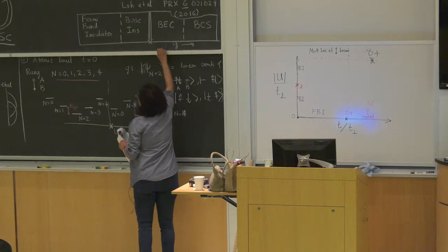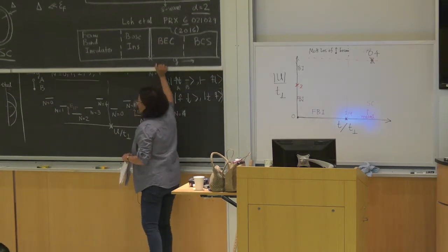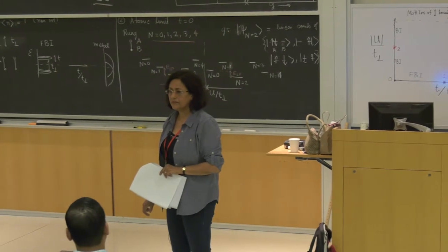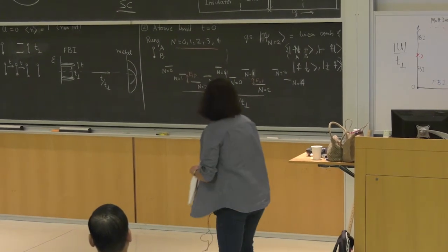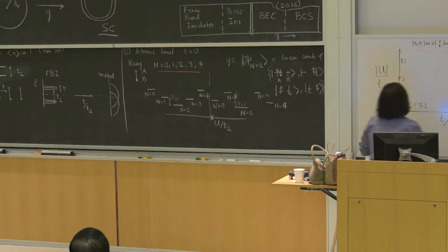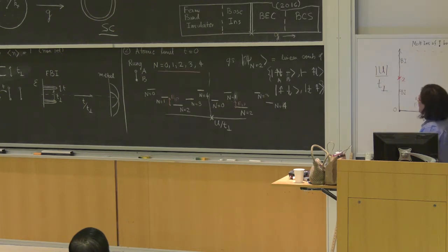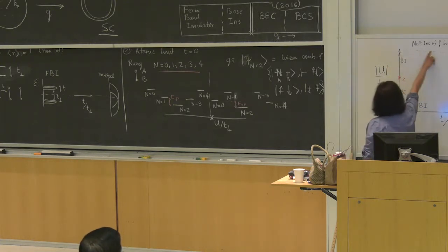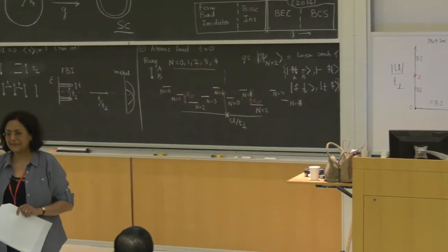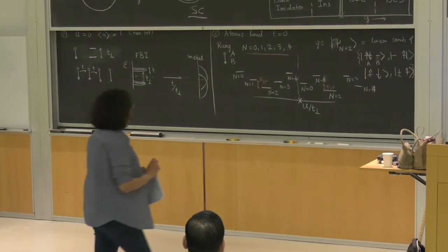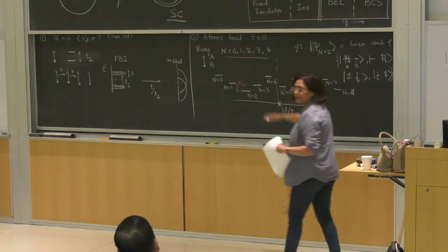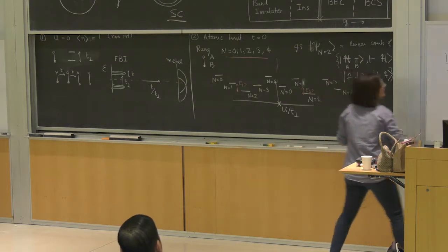The limit of large U — intuitively the N=4 state should be the ground state, right? Well, even in the atomic limit, I'm keeping my chemical potential such that my average density is at one — that's N equals two for the two sites, as opposed to a maximum of four.